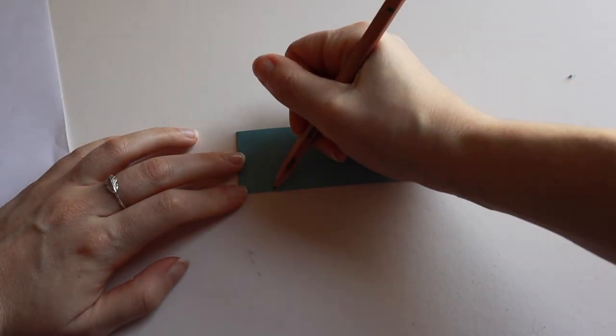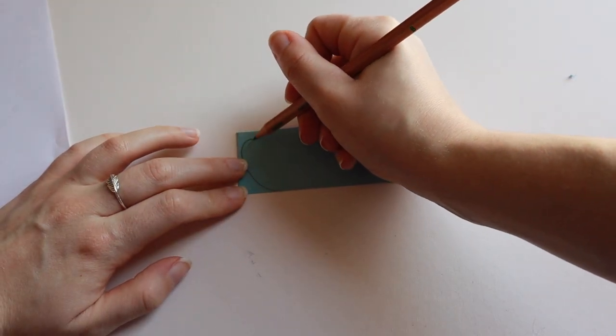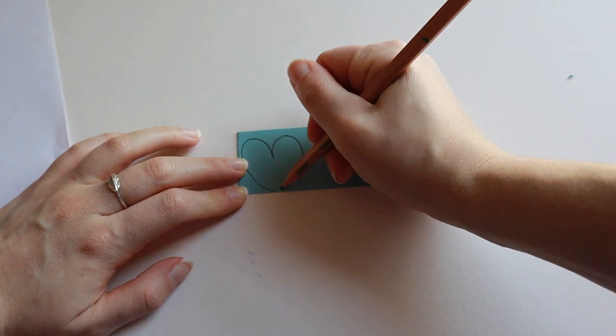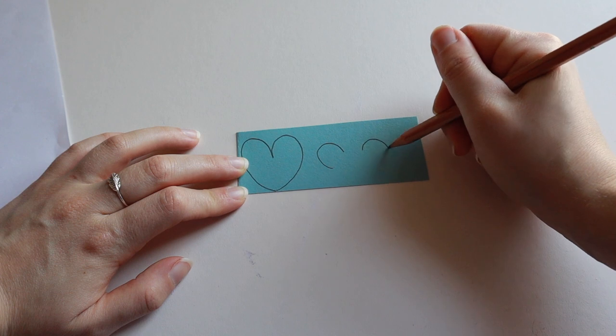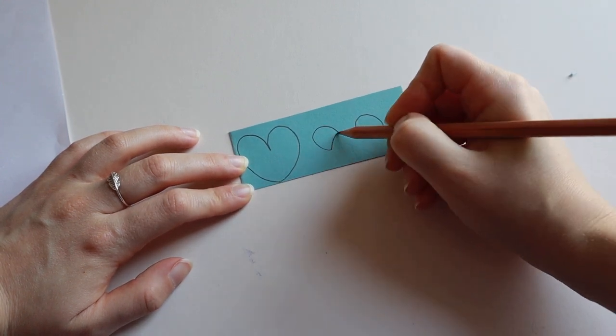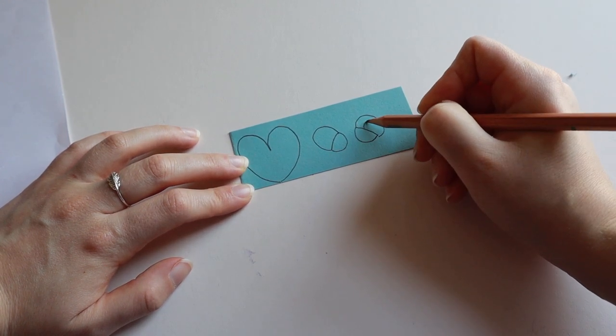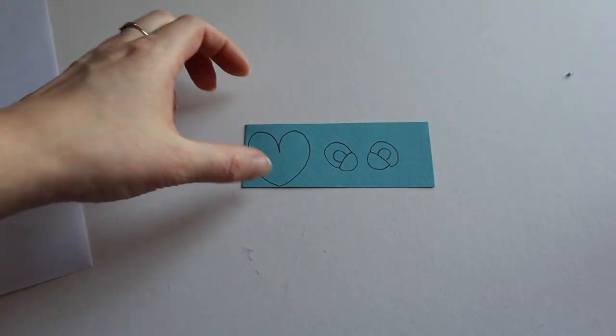Now we are going to make some feet. Draw a fat heart shape onto your second piece of card from earlier. As I am making a bear, I am drawing some ears as well. If you want to make ears, make sure you draw a tab to attach them with as well.